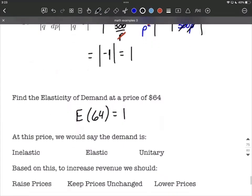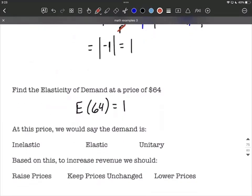So what does it mean when it's just 1? That tells us it's a unitary elasticity of demand, equal to 1. If it were above 1, it would be elastic. If it were below 1, that would be inelastic. Based on that, we're at a perfect price point to maximize our revenue, so we're going to keep our prices unchanged.